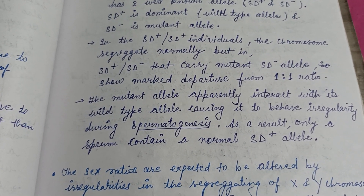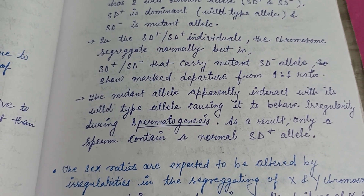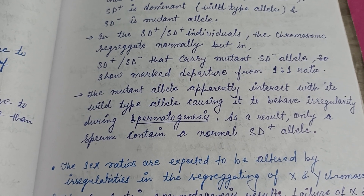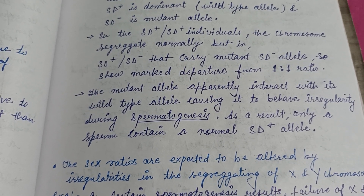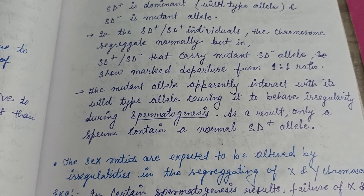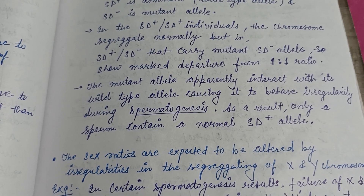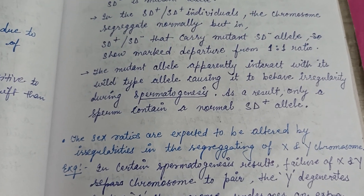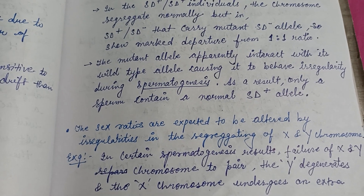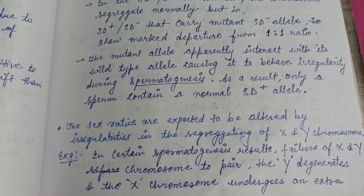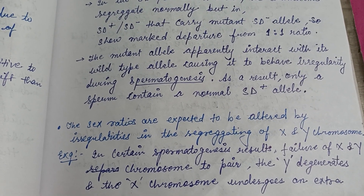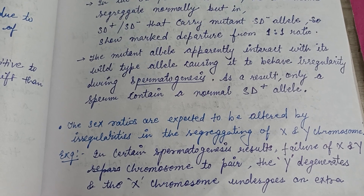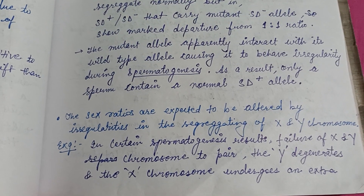In this case, the SD plus, SD plus individual has chromosomes that segregate normally. But the SD plus, SD minus individual, which carries the mutant SD minus allele, shows a marked departure from the 1:1 ratio. Any alteration in meiotic division causes meiotic drive, which results in alteration of allelic frequency in a population.